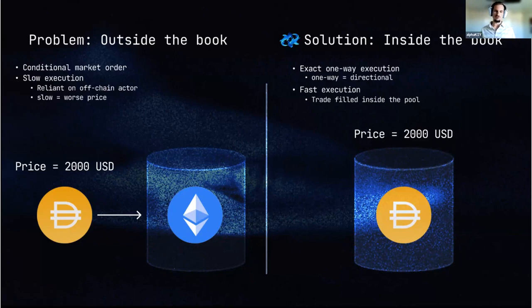In the case of the price being 2000 USD, that trade is going to execute when the price actually hits there. On the right, it's ready to be executed.